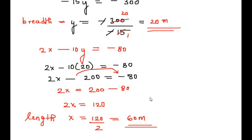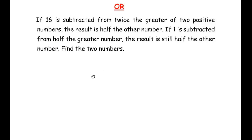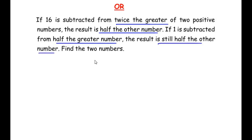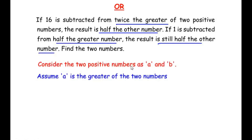Now let us move on to the OR question, which is also from the pair of linear equations in two variables chapter. The question states: if 16 is subtracted from twice the greater of two positive numbers, the result is half the other number. If 1 is subtracted from half the greater number, the result is still half the other number. Find the two numbers. Let us consider the two positive numbers as a and b, and assume that a is the greater of the two.